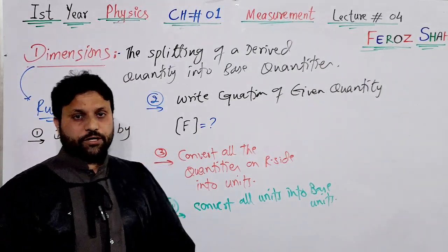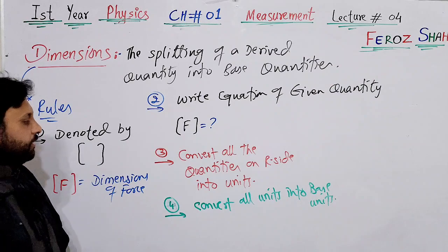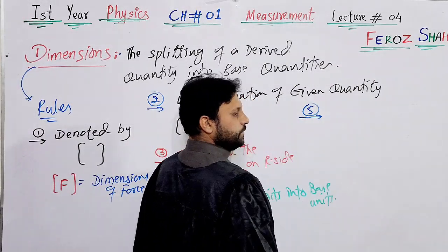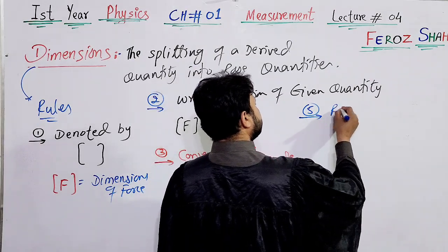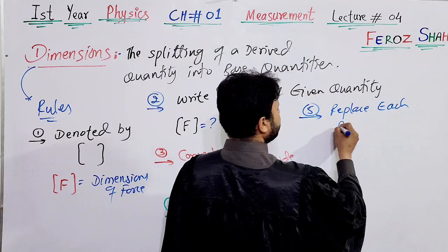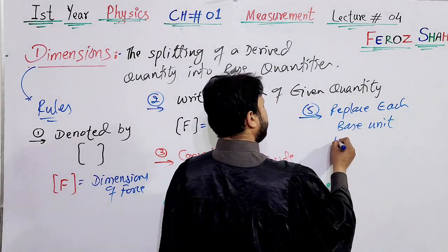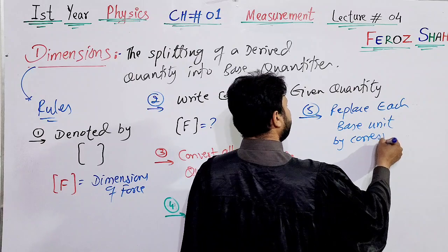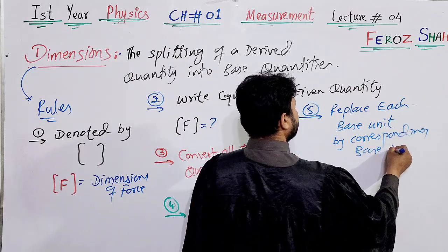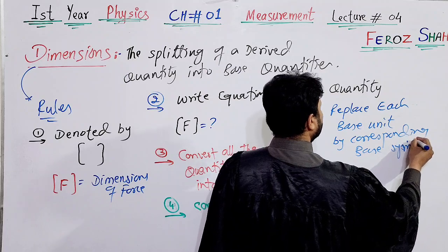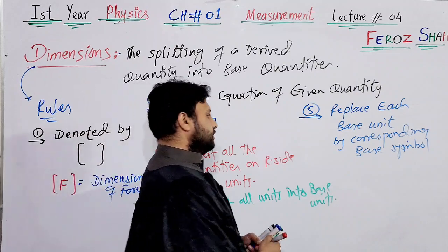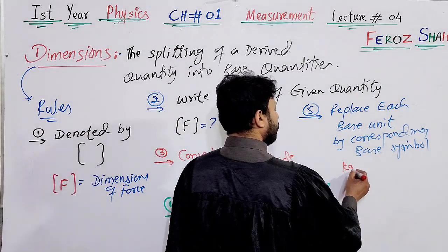Rule four: convert all units into base units. You have to convert all units on the right side to their corresponding base units. Rule five: replace each base unit by its corresponding base symbol — for example, kilogram is replaced by capital M for mass, second is replaced by capital T for time, and meter is replaced by L.